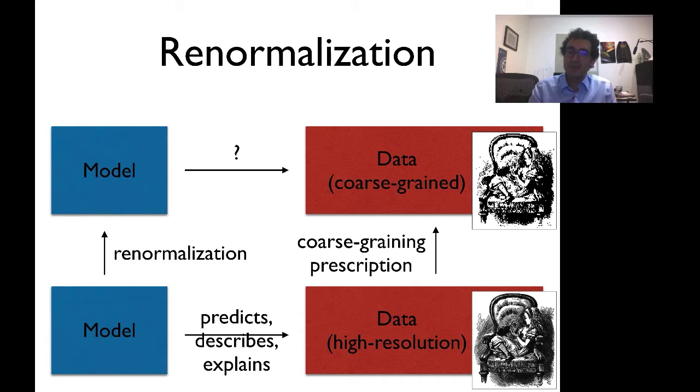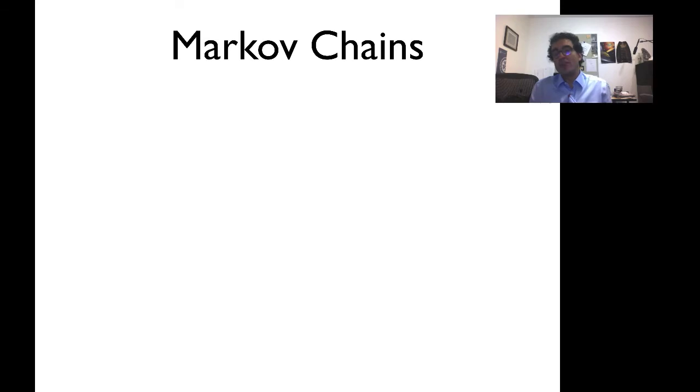In order to describe renormalization, you'll see, I have to tell you not just what is happening to the data, but also what's happening to the model. So I have to give you an example, not just of some data that records graining, but of a model that describes it. The model that we'll use is the Markov chain. So how do Markov chains work? What do they operate on? What are they supposed to describe or explain or predict?